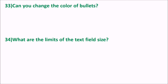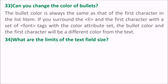Can you change the color of bullets? The bullet color of an unordered list is always the same as that of the first character in a list item. So if you surround the li tag and the first character with a set of font tags with the character attribute set, the bullet color and the first character will have a different color from the text.